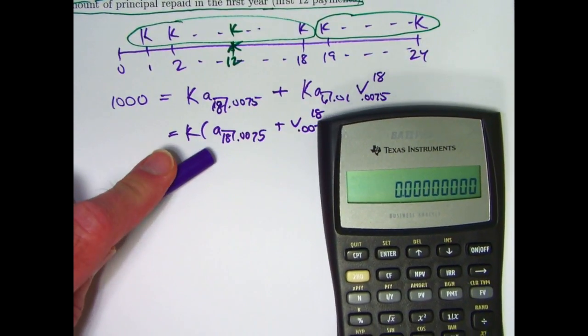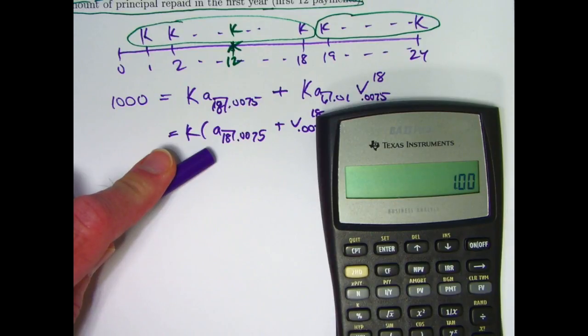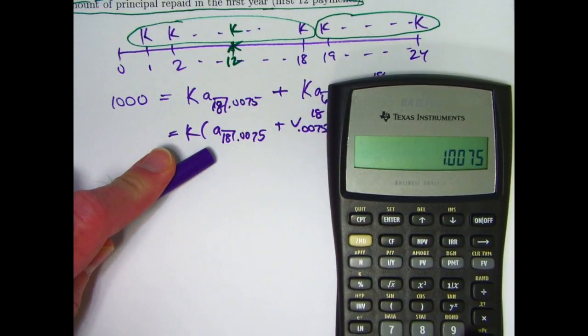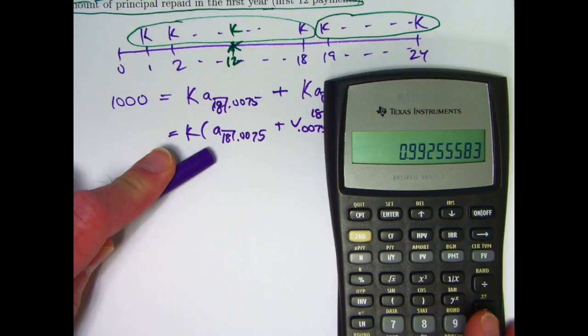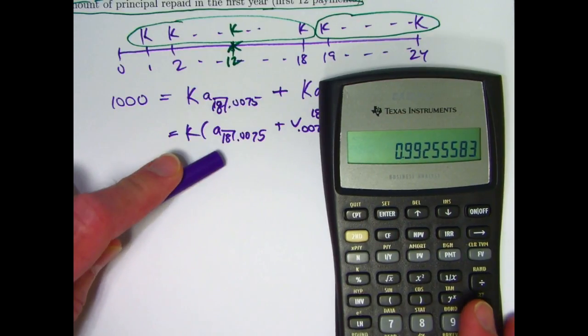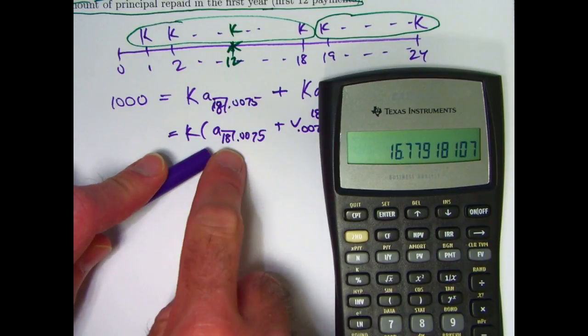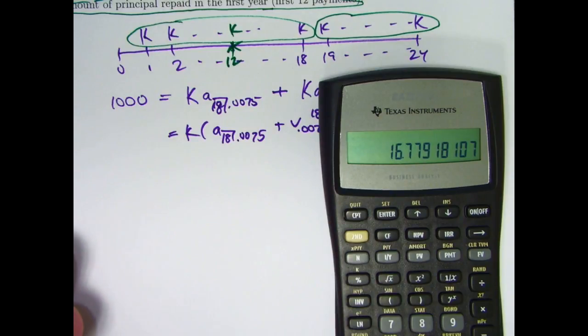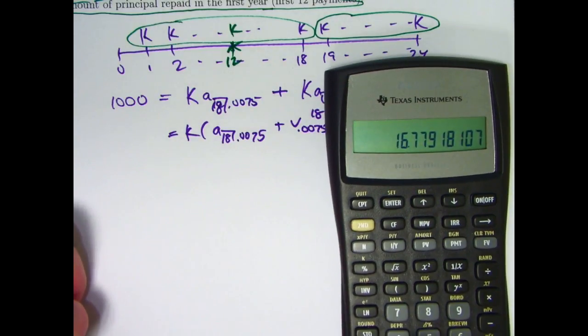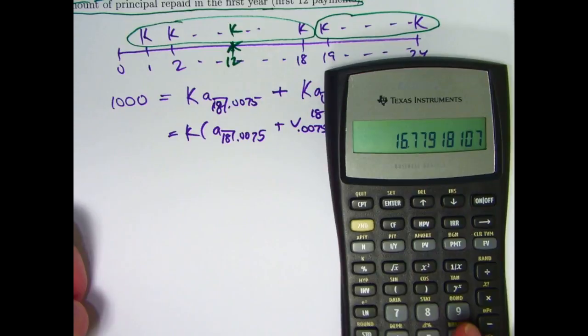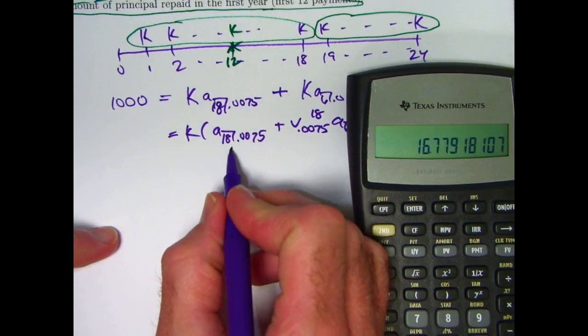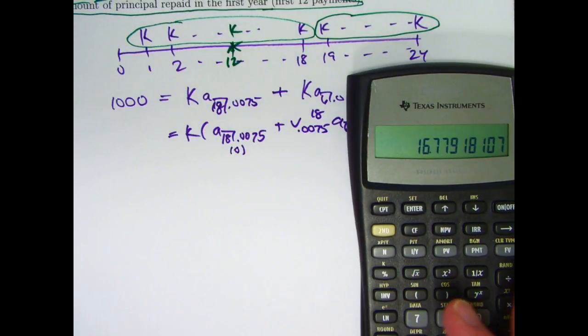So for this one, take 1.0075, take its reciprocal to get the V, raise that to the 18th power, subtract from 1, divide by 0.0075. This value here, this a-angle is 16.779. Let me go ahead and store that in register 0. I'll put a little 0 here to remind myself of that.